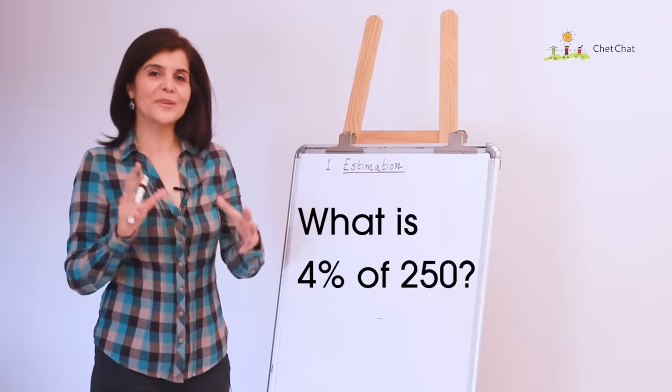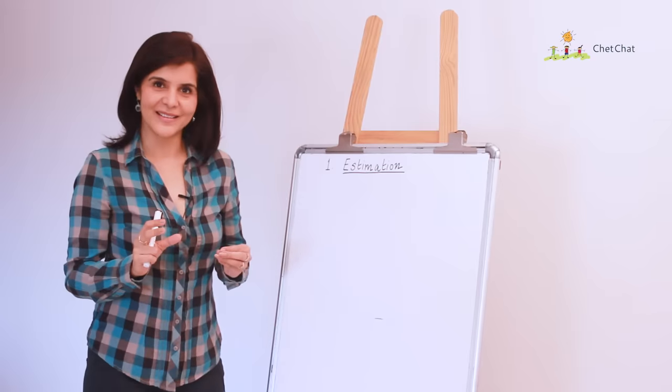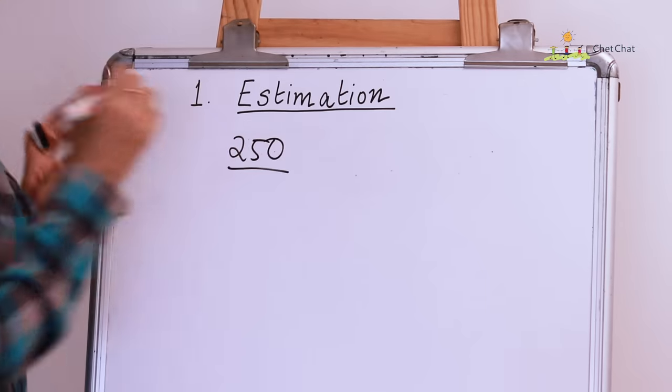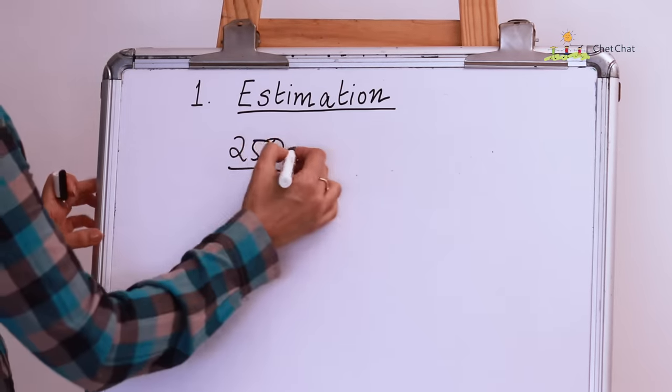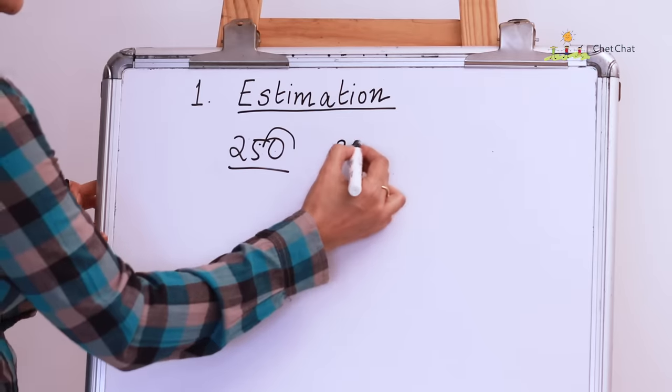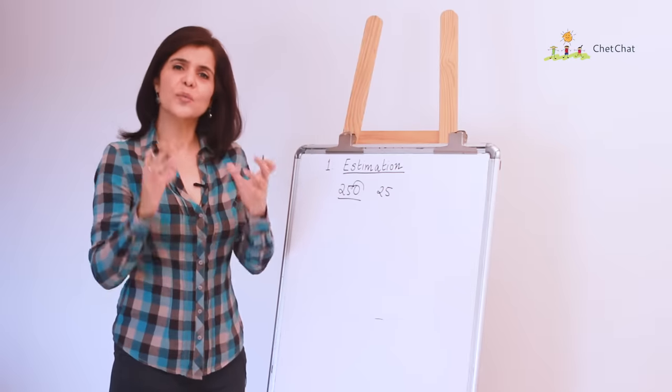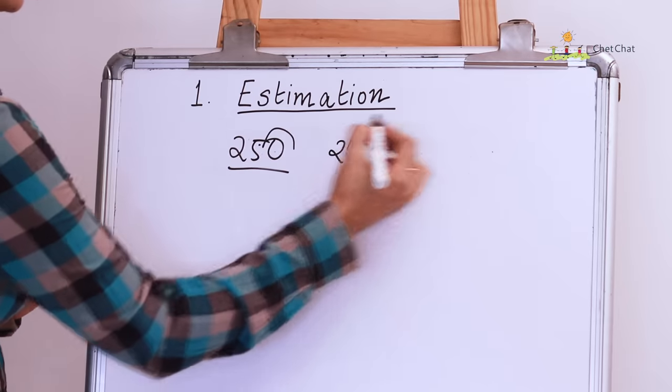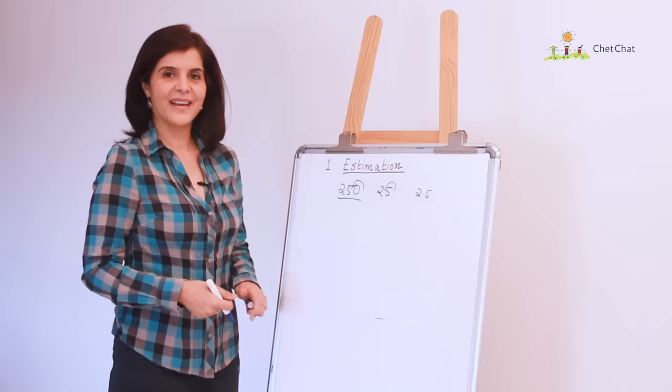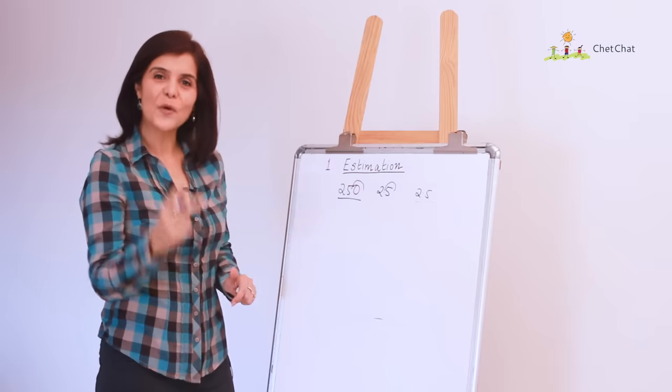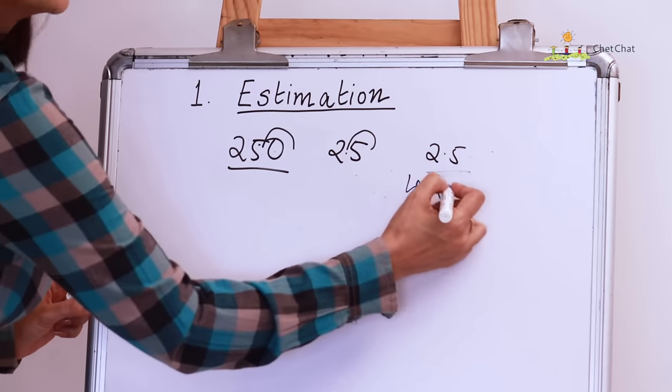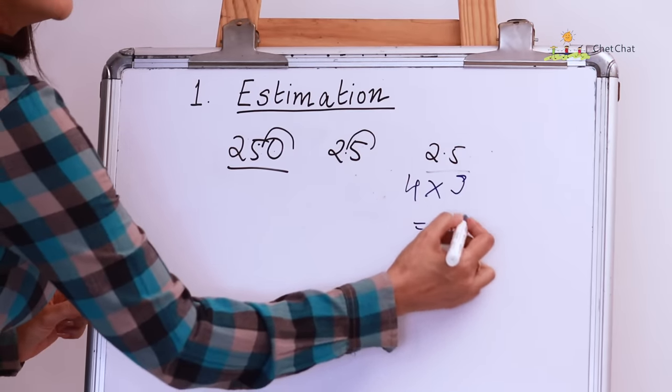Now, before we jump into the answer, how about we try estimating that answer. Let's take 10% of 250 and 10% would mean 25, right? We all know that. Now, what is 1% of 250? That would mean 2.5 and if we want 4% then it's 4 times of 1% which is 4 times of 2.5 which is 10.